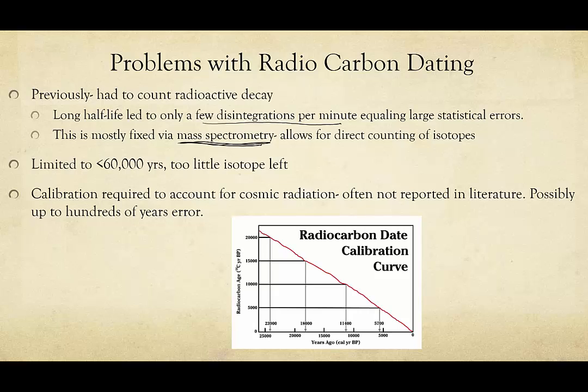Carbon dating is pretty limited in its timeline — it's got to be less than about 60,000 years. Over time, all of that carbon-14 is decaying, and eventually so much of it has decayed that small random errors lead to really bad mistakes in dating. After 60,000 years, there just isn't enough isotope left to get an accurate measurement, so carbon dating is only really good within that timeline.